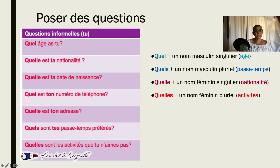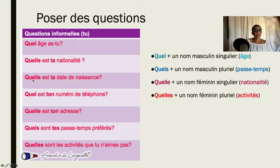Nationality is feminine, so quelle takes the feminine form. Pareil for date de naissance — same thing for date de naissance, your birth date — feminine and singular. Quelle est ton numéro? That would be masculine.